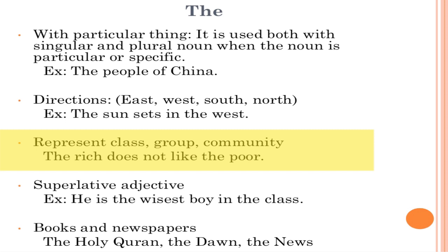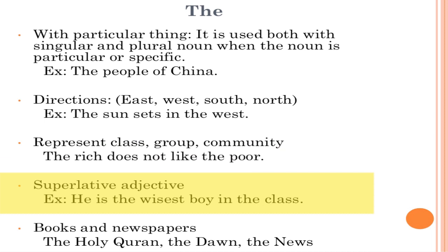'The rich' and 'the poor' are collective nouns representing all rich and poor people. Similarly, we use 'the' with groups like the English-speaking community, the BMC group, communities like the Sunni, the Shia — they all use 'the'.